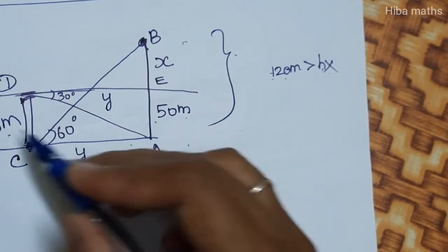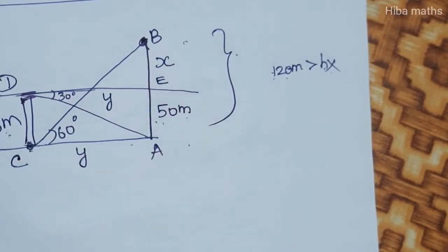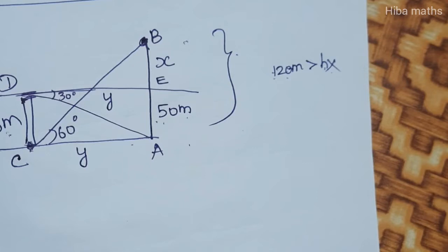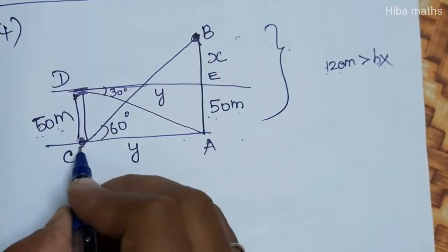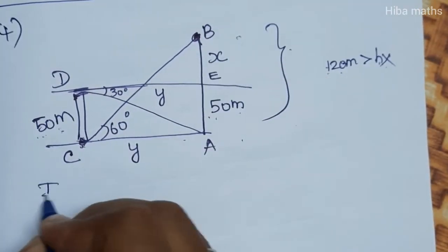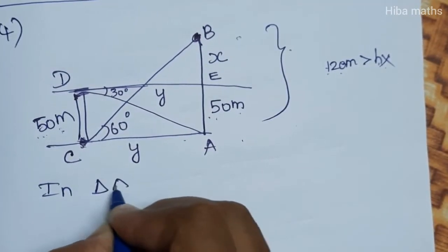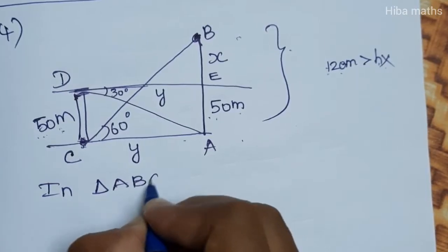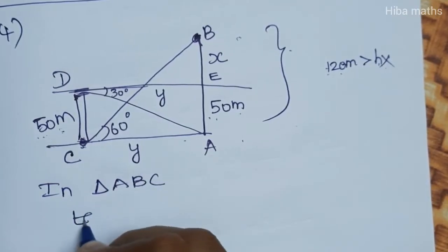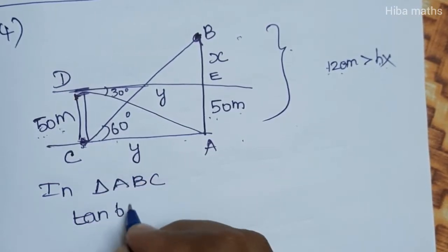The height of the apartment is 50 meters, and x is the unknown height we have to find. So let us solve. In triangle ABC, we apply tan 60 degrees.